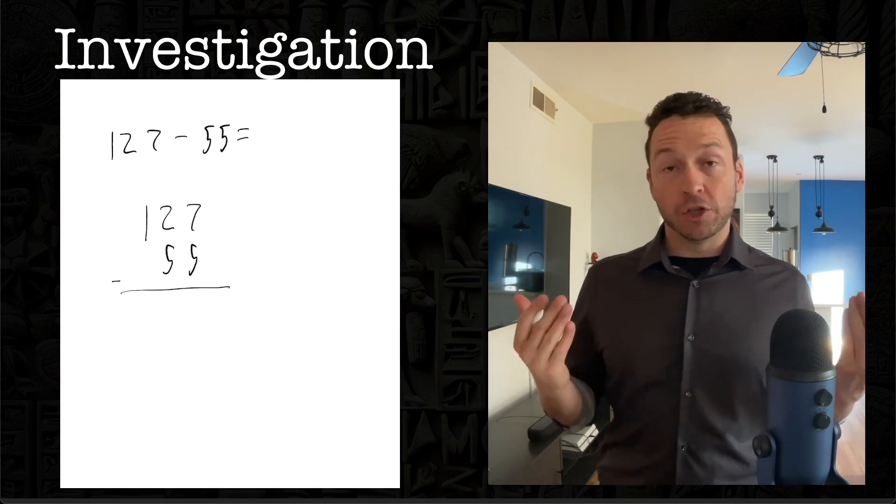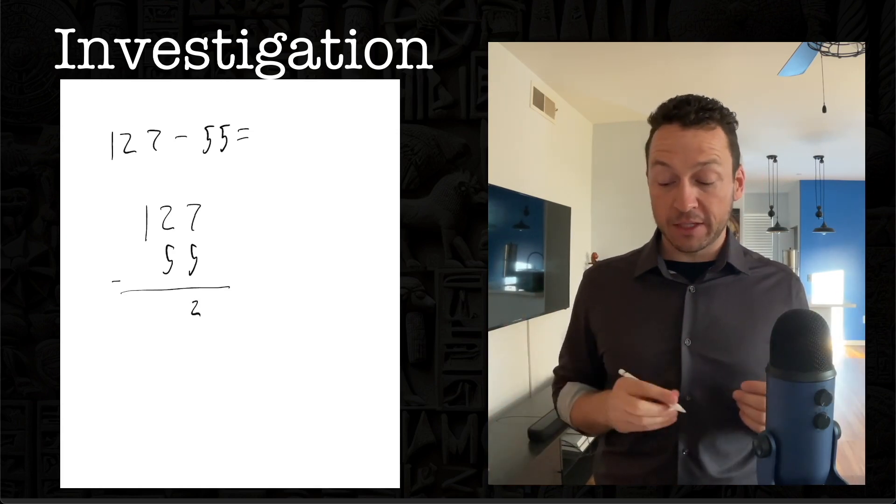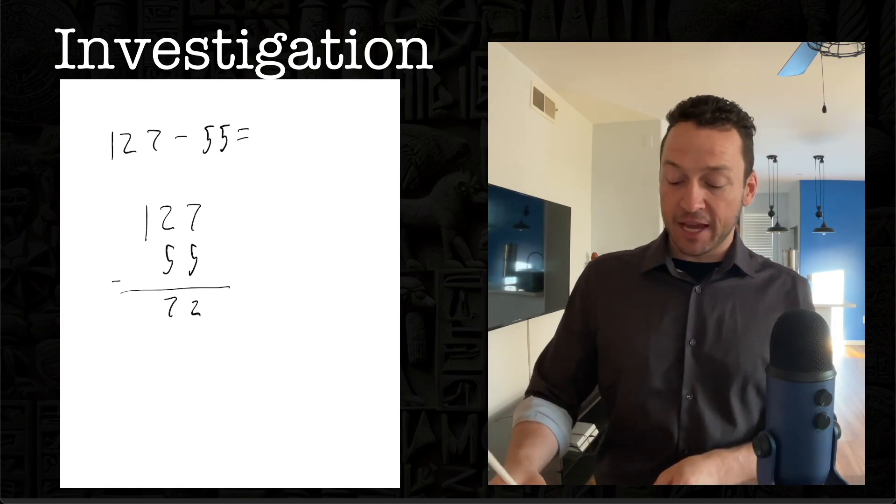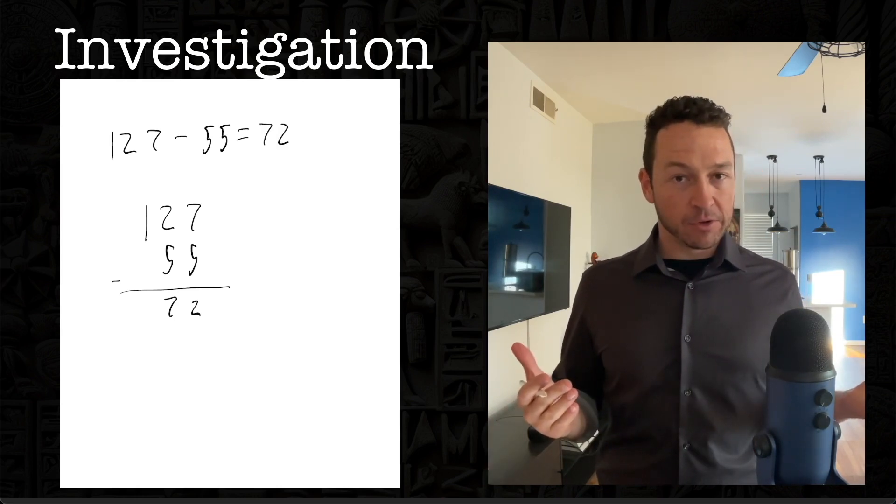He's going to do 127 minus 55. So he writes it in this nice neat pattern again. Seven minus five is two. He looks at his subtraction table. There's no borrowing there, so that one's easy. 12 minus five is seven, so that's seven tens. And he gets his final answer. And that is subtraction in Arabic numerals.